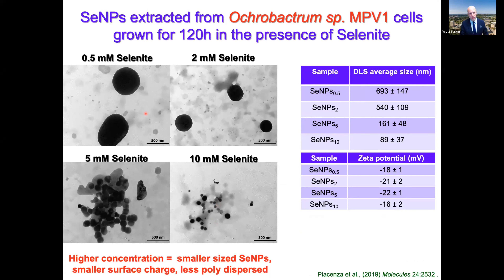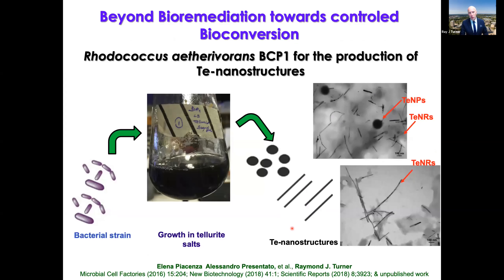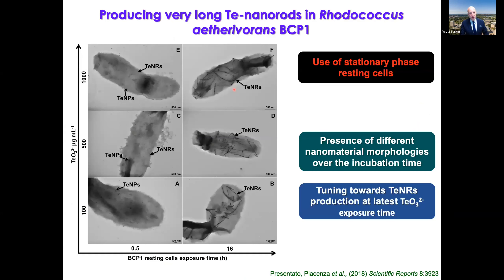A different bacterium produces nanoparticles with a nice size distribution and good zeta potential for stability. Another bacterium was rather unusual — higher concentrations gave smaller nanoparticles than lower concentrations, and we didn't get quite as good zeta potential stability, but they were still quite useful. For the BCP1 strain in particular, we have done extensive work and found it very exciting that we can make both tellurium nanorods and tellurium nanoparticles.